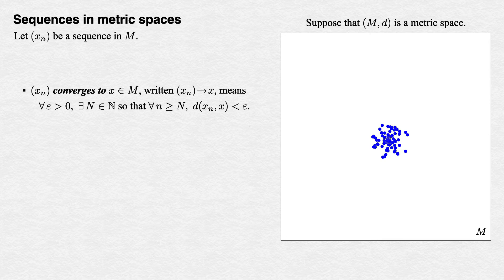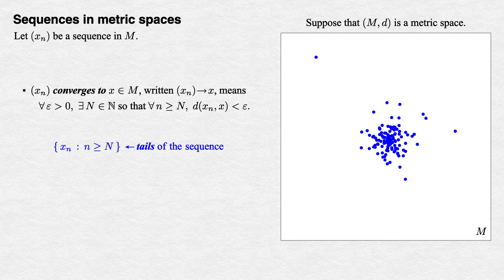In this definition, we're always looking at sets of terms after removing some initial terms. These sets, {x_n : n >= N}, are what we call the tails of a sequence. Don't let the notation throw you off.